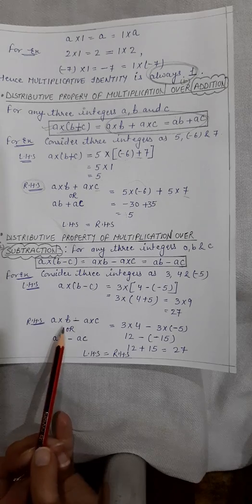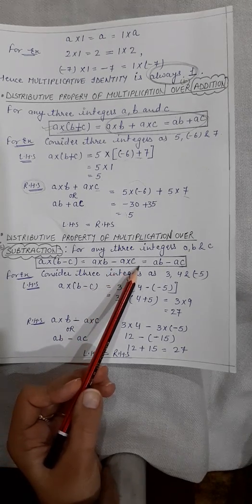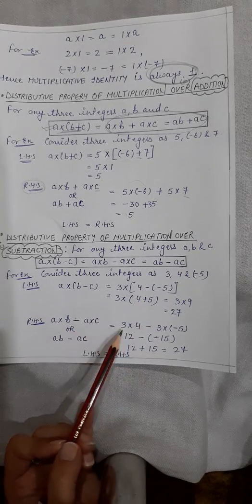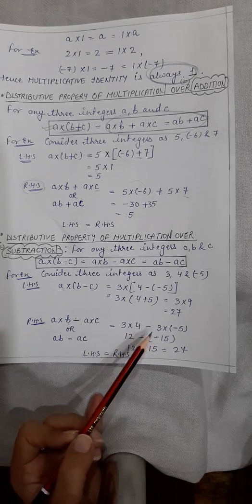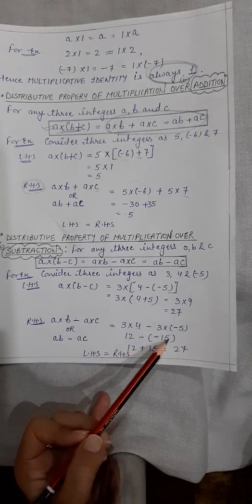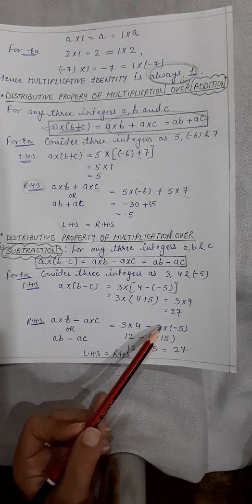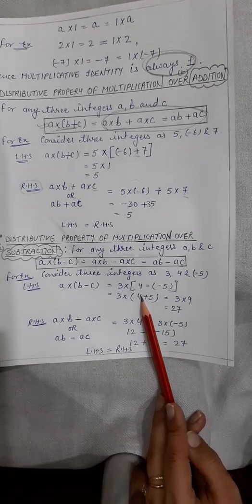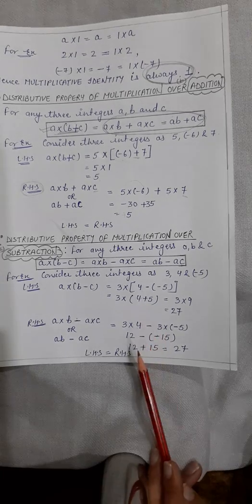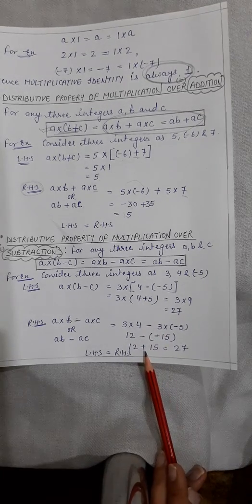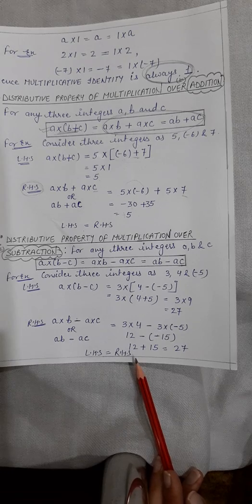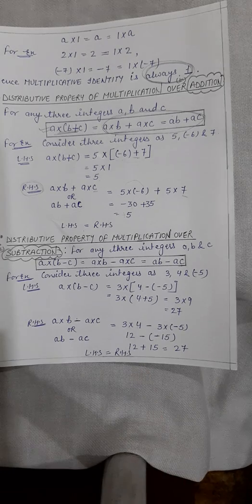Now check the right-hand side: a into b minus a into c, which is 3 into 4 minus 3 into (minus 5). 3 into 4 is 12. Then 3 into 5 is 15, and the sign is negative because 3 is positive and 5 is negative — giving minus 15. Now minus minus 15 becomes plus 15. So 12 plus 15 is 27. Left-hand side equals right-hand side. These are the properties of multiplication of integers.